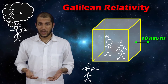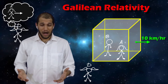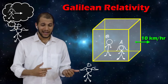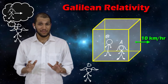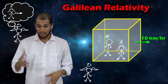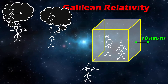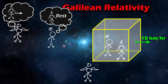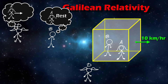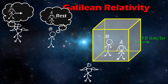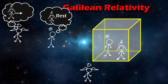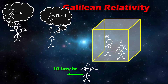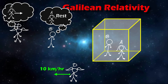Something similar is going to happen here. Since the box, Alice and Bob are all traveling towards the right at the same speed, Bob says that Alice is at rest. In fact, if Bob looked outside he would see that Divya is the one who's moving towards the left at 10 kilometers per hour.